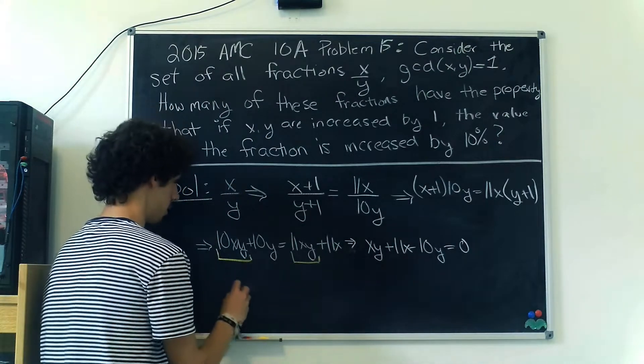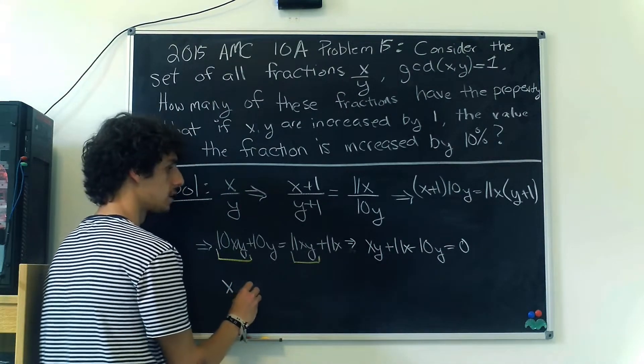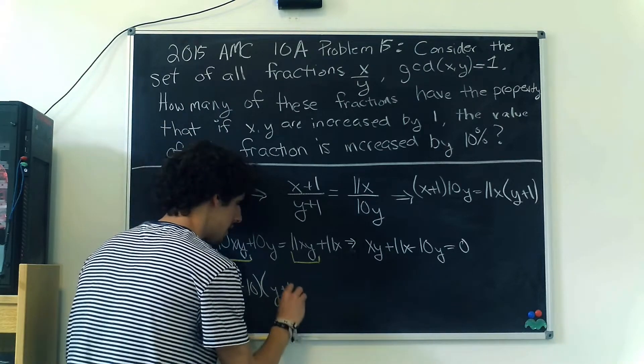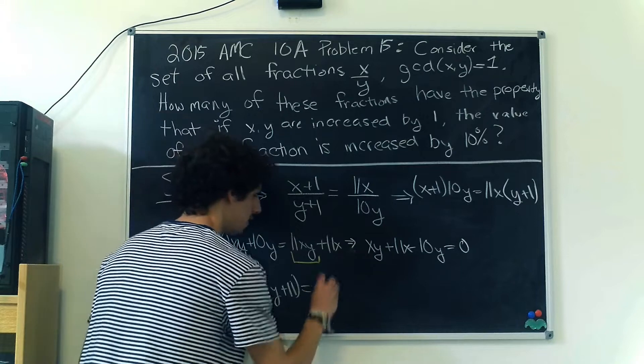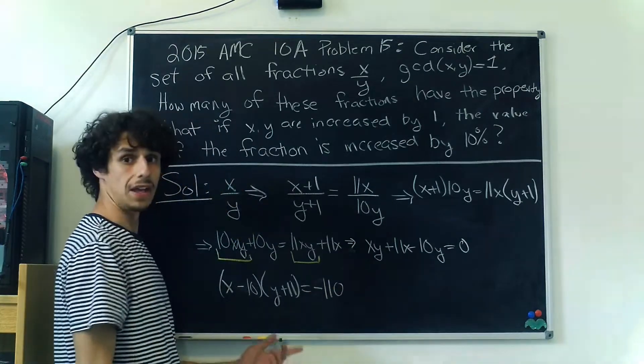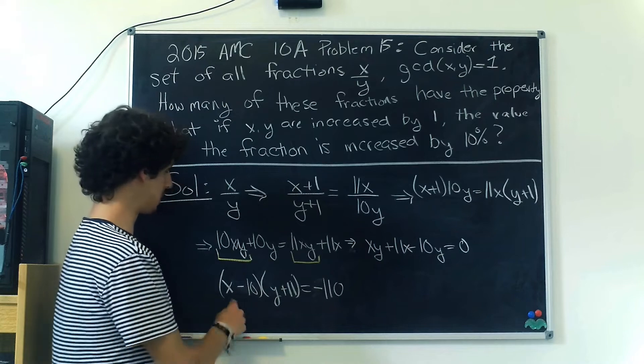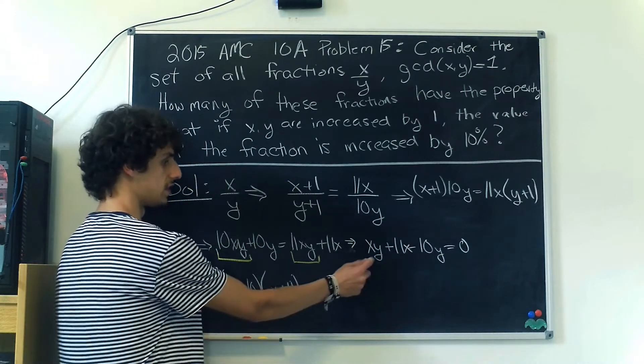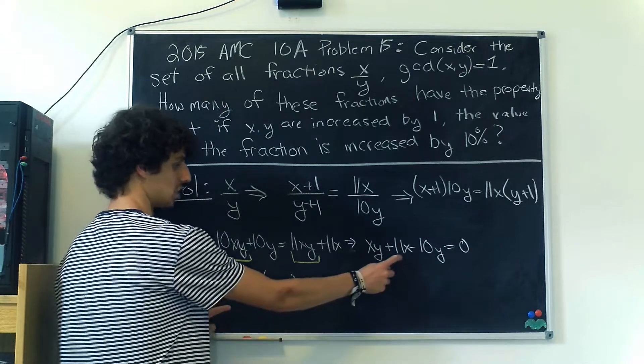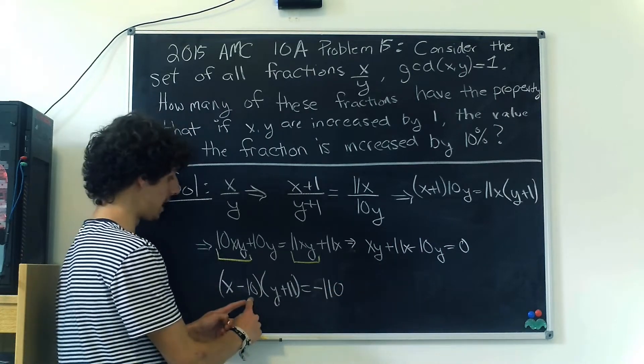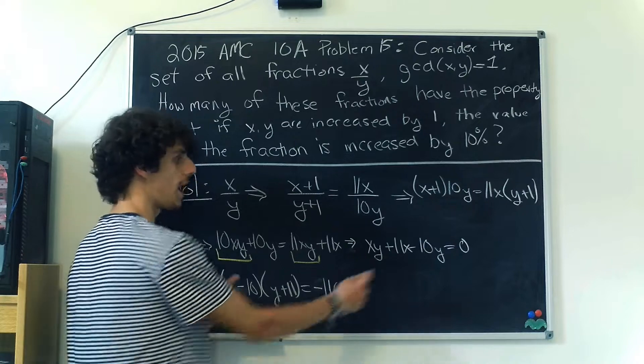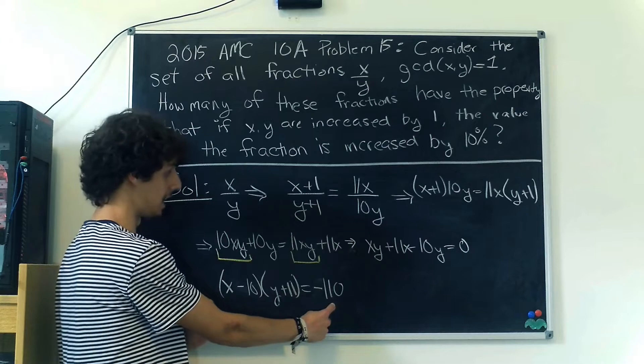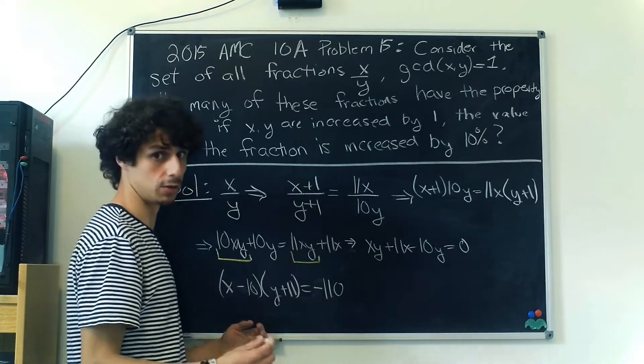Now we can factor this. We can say (x-10)(y+11) = -110. When we multiply x into this term, we get xy. We get 11x. When we multiply in -10, we get -10y. And -10 times 11 is -110. That's why we can do this.